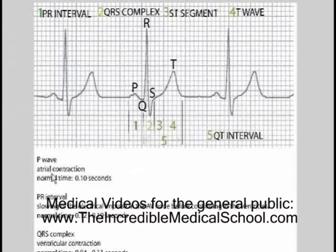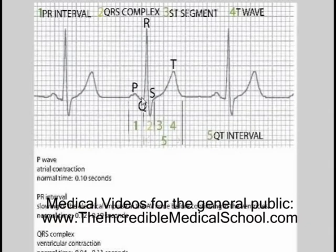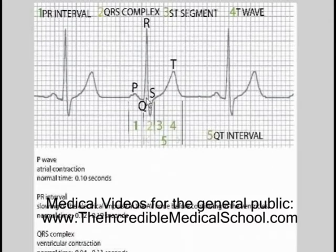As you can see, the P wave normal time is 0.10 seconds. The PR interval — that's the distance from the P wave to the R wave — represents the slowing of the electrical impulse as it goes through the AV node before going into the ventricle. The normal time from the P wave to the R wave is 0.12 to 0.19 seconds.